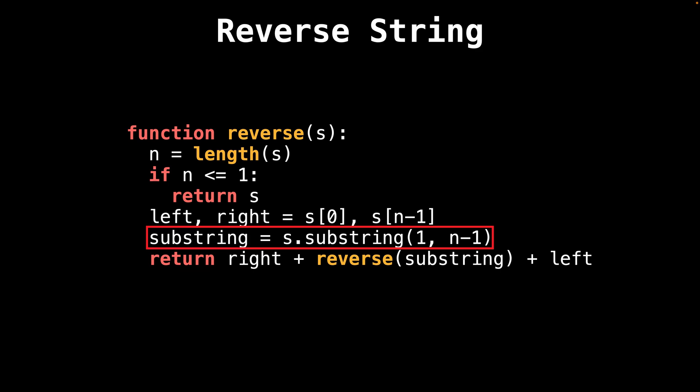In the following line, we extract a substring of the inner string so that we can pass it down to the reverse function. We specify that the substring should start at index one and end at index n minus one to exclude the first and the last characters.